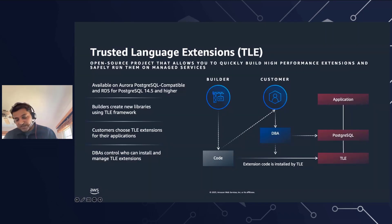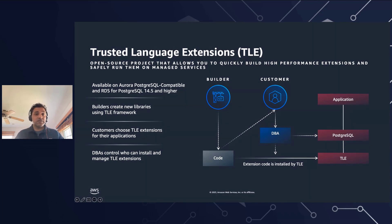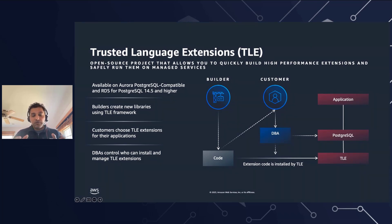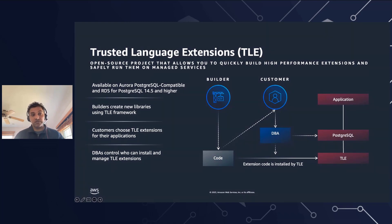Now let's talk about Trusted Language Extension, or TLE. Postgres has become a preferred open-source relational database for many enterprises and startups because of its extensible nature — as a developer, you can extend Postgres functionality by writing extensions in your preferred language. We currently support more than 85 Postgres extensions such as PG Audit, PostGIS, and PG Cron. TLE is an open-source development kit and framework that allows you to write your own performant extensions that can securely run on managed services. A builder can build extensions, customers choose which they require, and DBAs install and manage those TLE extensions.